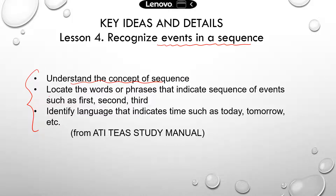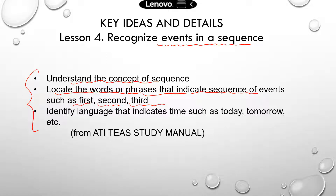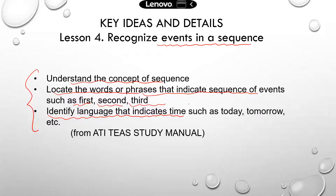Second, you need to be able to locate the words or phrases that indicate the sequence of events — things like first, second, third, last. And finally, you need to be able to identify language that indicates time. Sometimes there's an overlap between the words that indicate sequential order and the words that indicate time.